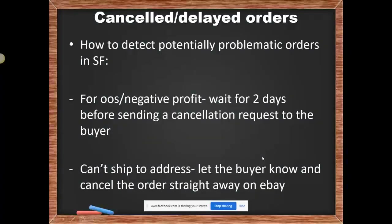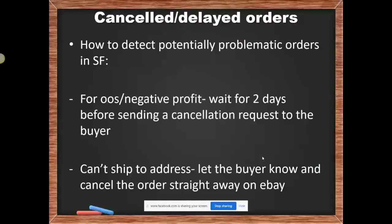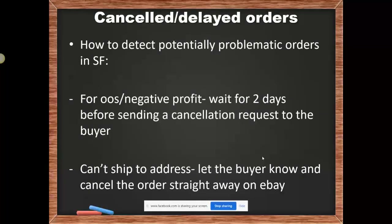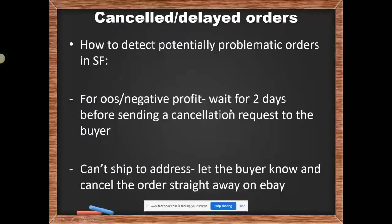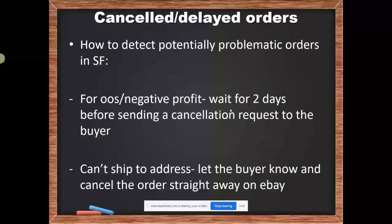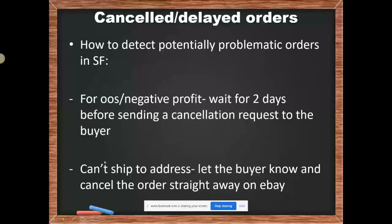When you want to cancel an order on eBay, you have three options. Never, never choose the first option — it says it's your fault that you're out of stock. Don't ever choose that because you'll get a defect. Instead, choose one of the two other reasons: either 'Buyer agreed to cancel the order' or 'There was a problem with the buyer's address.' When the buyer agrees, you can legitimately cancel under 'Buyer agreed.' When there's an address issue, you cancel under 'Problem with the address.' You're not lying.